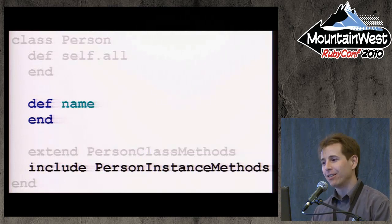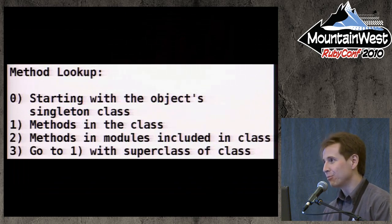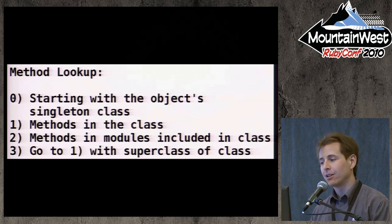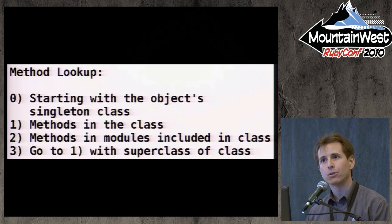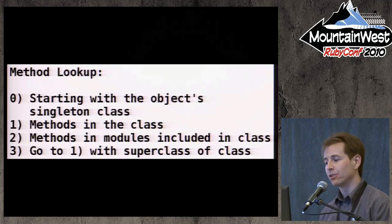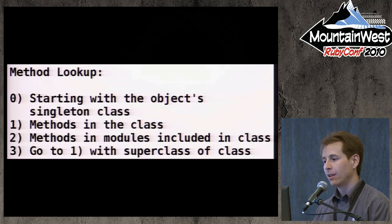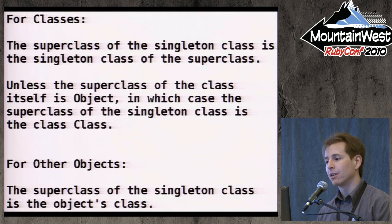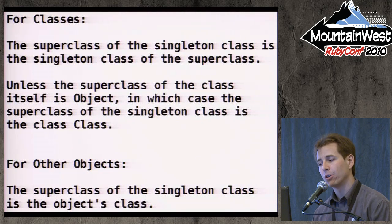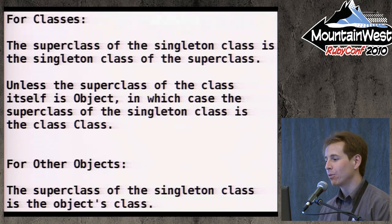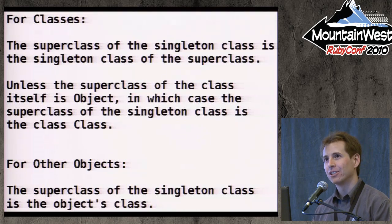I'm going to attempt to explain Ruby's method lookup quickly, with some simplification, imprecision, and inaccuracy. Basically, when a method is called on any Ruby object, it first looks in its singleton class, and then any modules included in that singleton class in reverse order of inclusion. If the method hasn't been found or the found method called super, it substitutes the singleton class with the singleton class's superclass and then restarts the lookup. Given that lookup process, there are three interesting cases. For classes, the superclass of the singleton class is the singleton class of the class's superclass — unless the current class is subclassed directly from Object, in which case the superclass of the singleton class is the Class class. For other objects, the superclass of the singleton class is just the object's class itself.